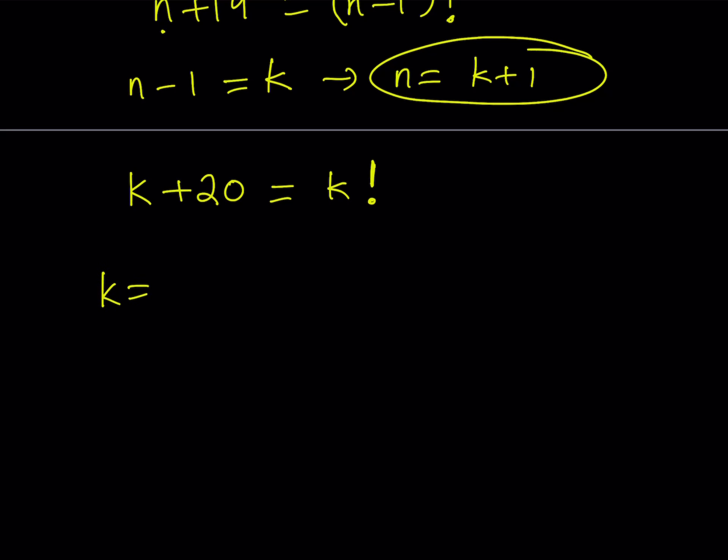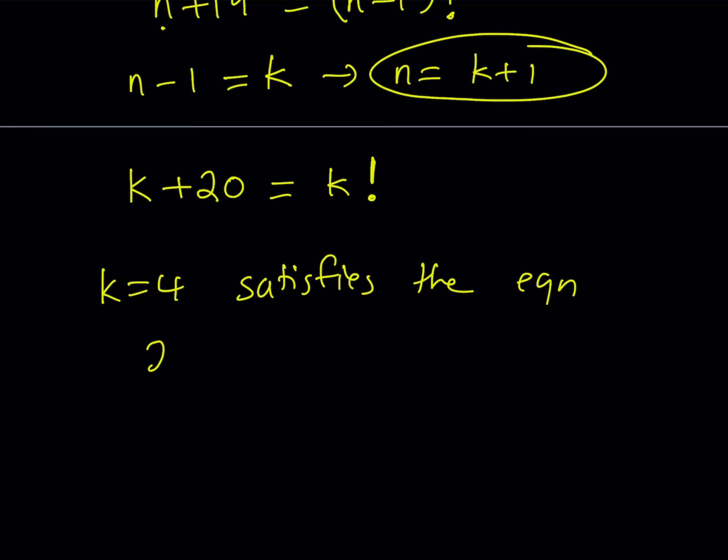In other words, k equals 4 satisfies the equation. How do I know that? If you replace k with 4, you get 24 equals 4 factorial, which is true. We got a solution.